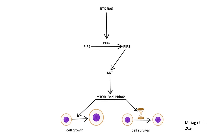This diagram illustrates the PI3K-AKT pathway, a crucial signaling cascade that regulates cell growth and survival. This pathway is frequently activated in melanoma and plays a key role in tumor development and progression.